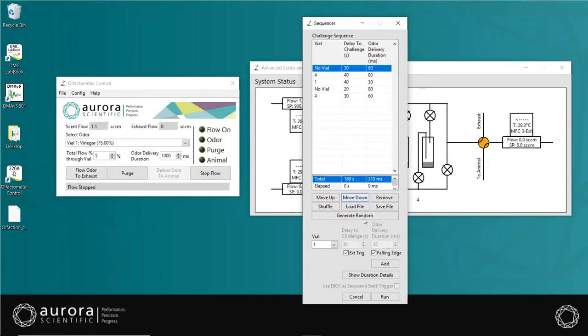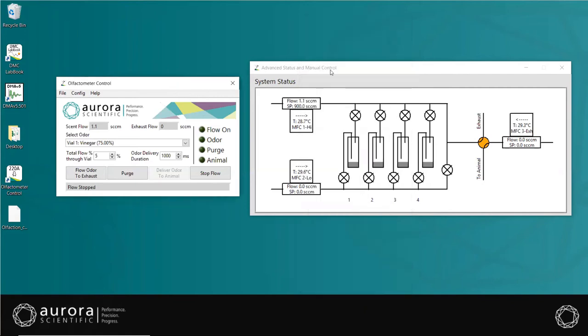To execute a sequence, simply click Run located at the bottom of the sequencer window. If you do not wish to use a sequence of challenges, but rather manually deliver odorant to the animals, you can use the main screen to accomplish this.